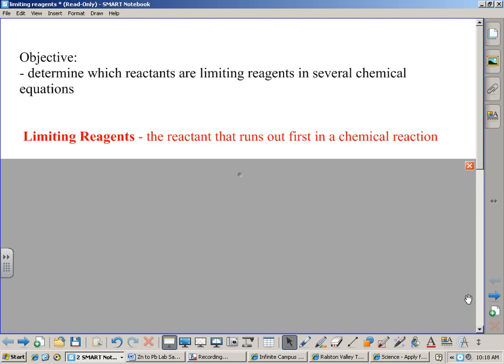Today's lecture is on limiting reagents. You can see the objective at the top there. We're going to determine which reactants are limiting reagents in several chemical equations. We're going to look at two examples today. Limiting reagents are defined as the reactant that runs out first in a chemical reaction.